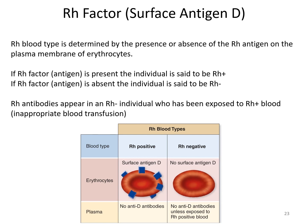The Rh factor (surface antigen D) determines whether blood type is positive or negative. If the Rh antigen is present, the person is Rh positive; if absent, they are Rh negative. This is independent of ABO blood type — you will be A positive or A negative, B positive or B negative, AB positive or AB negative, or O positive or O negative. The positive or negative simply refers to whether you have the Rh factor.